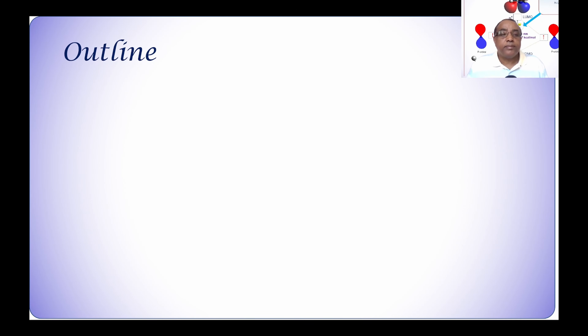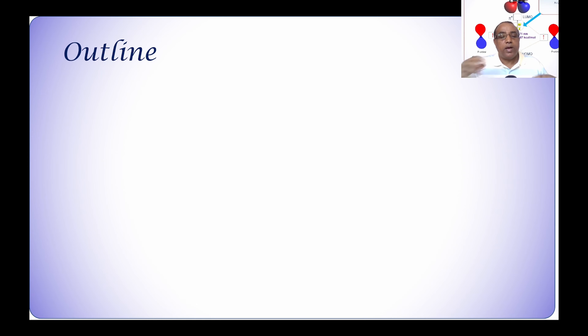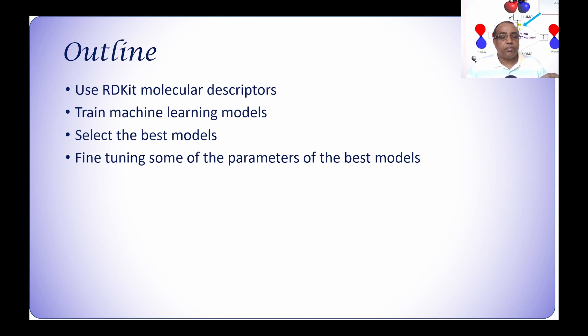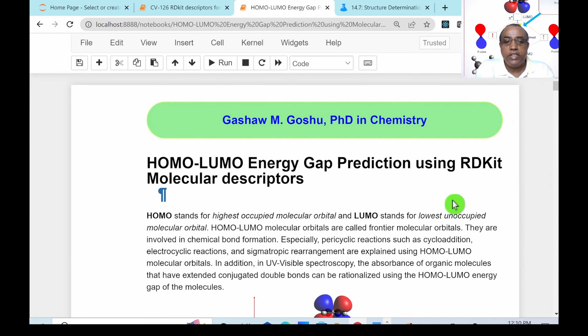Hello everyone. In today's video I will use RDKit descriptors that I calculated previously, then train a bunch of machine learning models. From that I'll select the best models based on parameters, do some fine tuning, and then save these models for future use. In this video I'll use RDKit descriptors to develop a machine learning model that can predict the HOMO-LUMO energy gap of molecules.